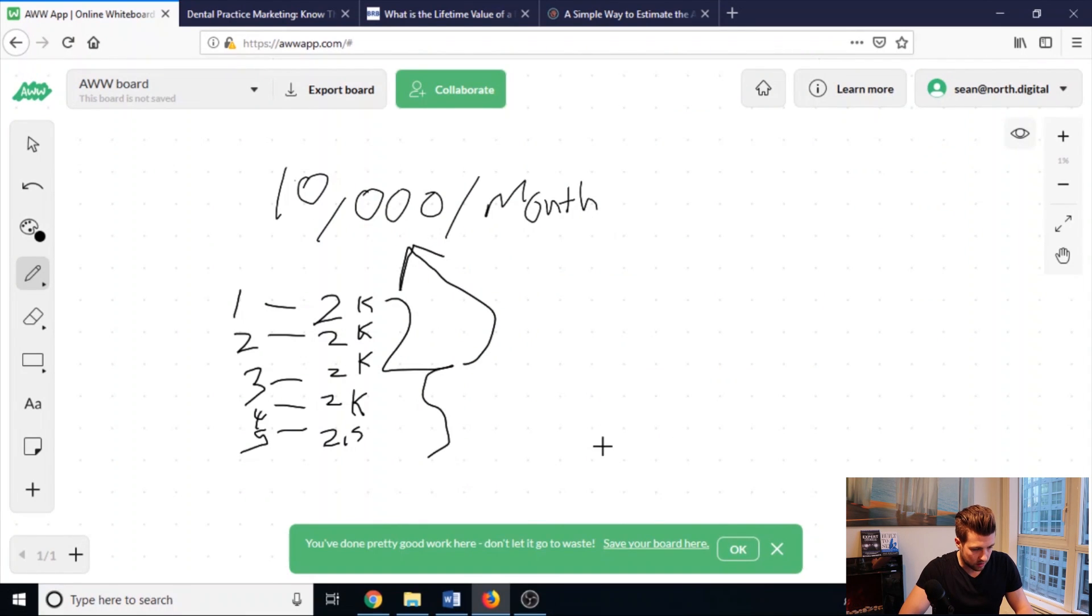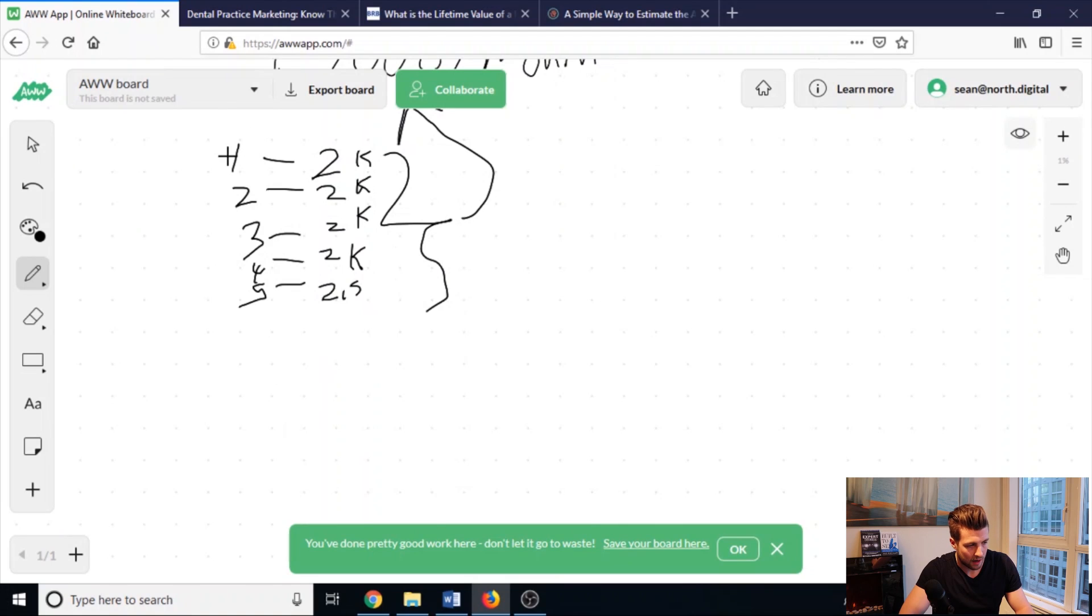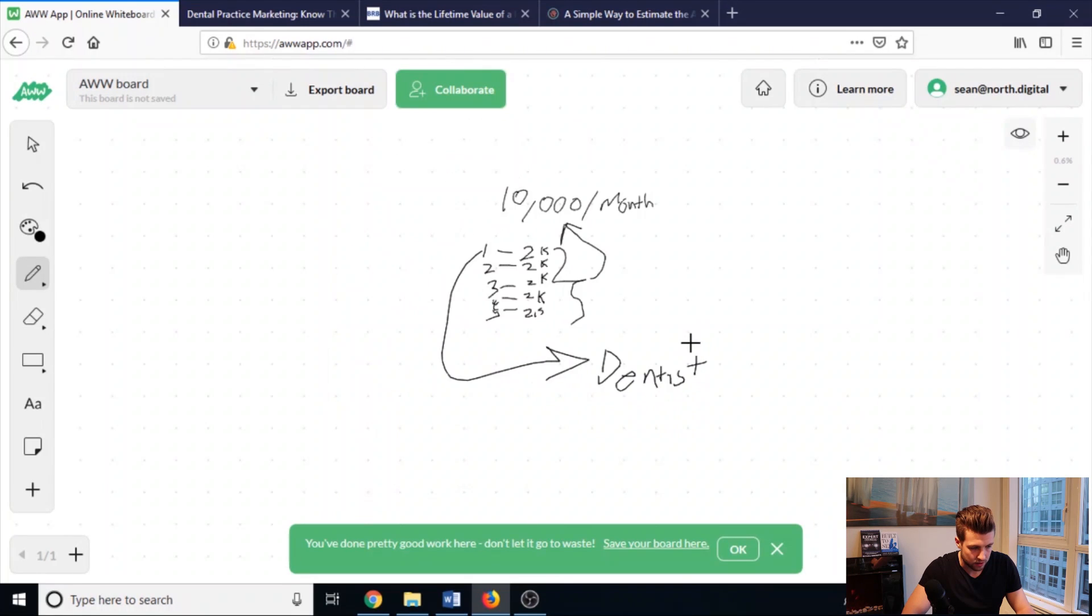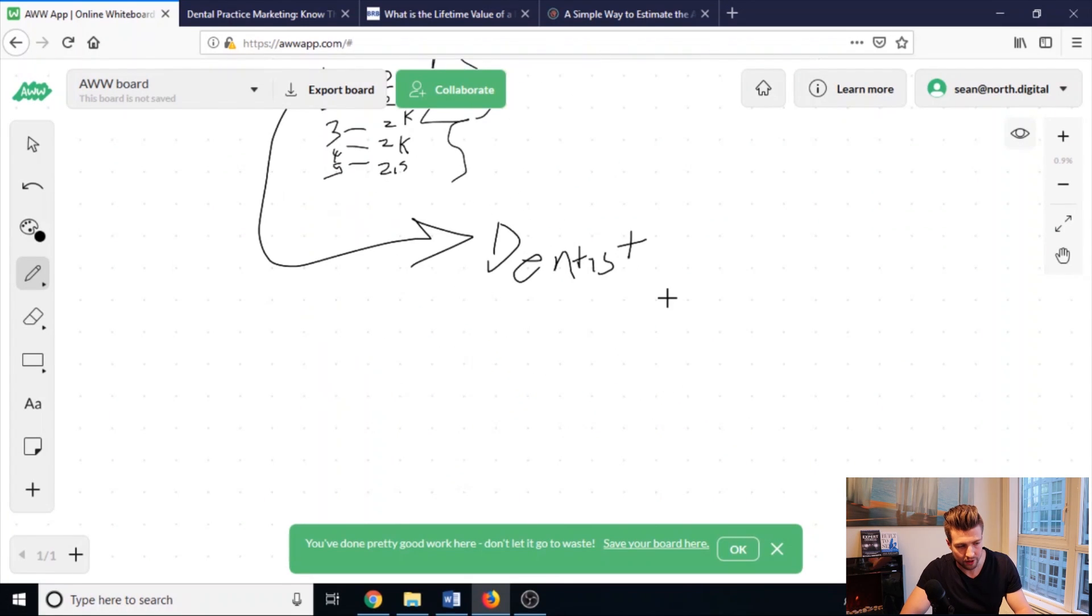Now let's drill into how exactly we get a business to pay us $2,000 per month. Let's just drill into one of these things. Now, for this, I'm going to need the example of a dentist. We have a few dental clients, and to be honest, personally with our agency, we have gotten the best results for dentists.